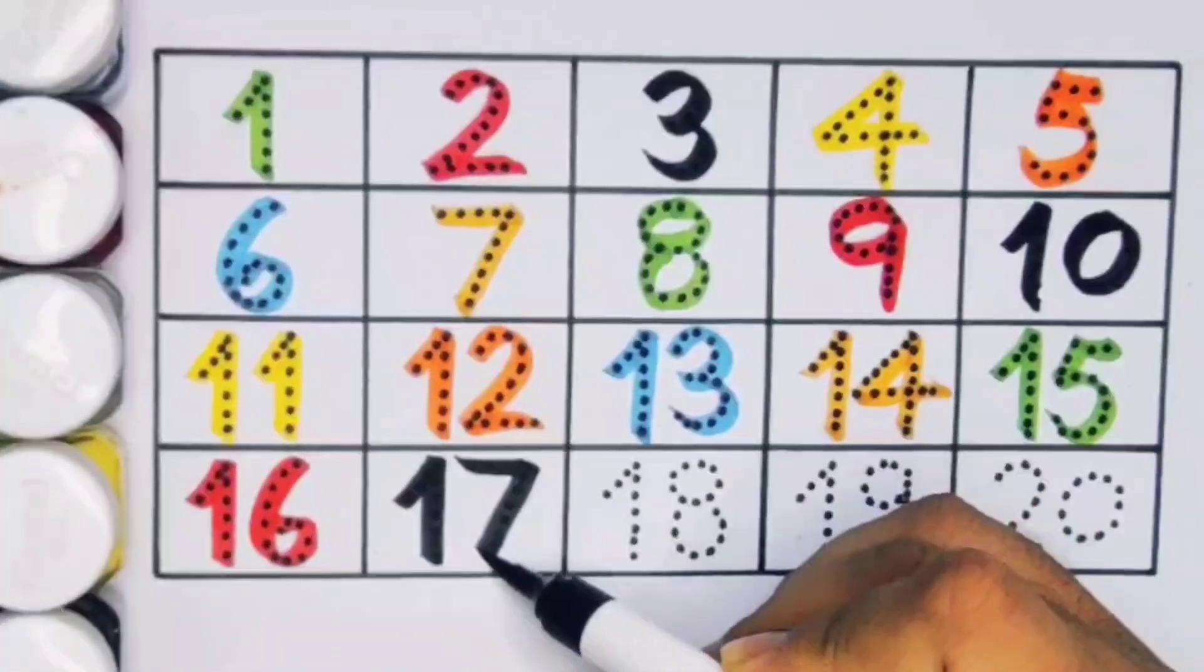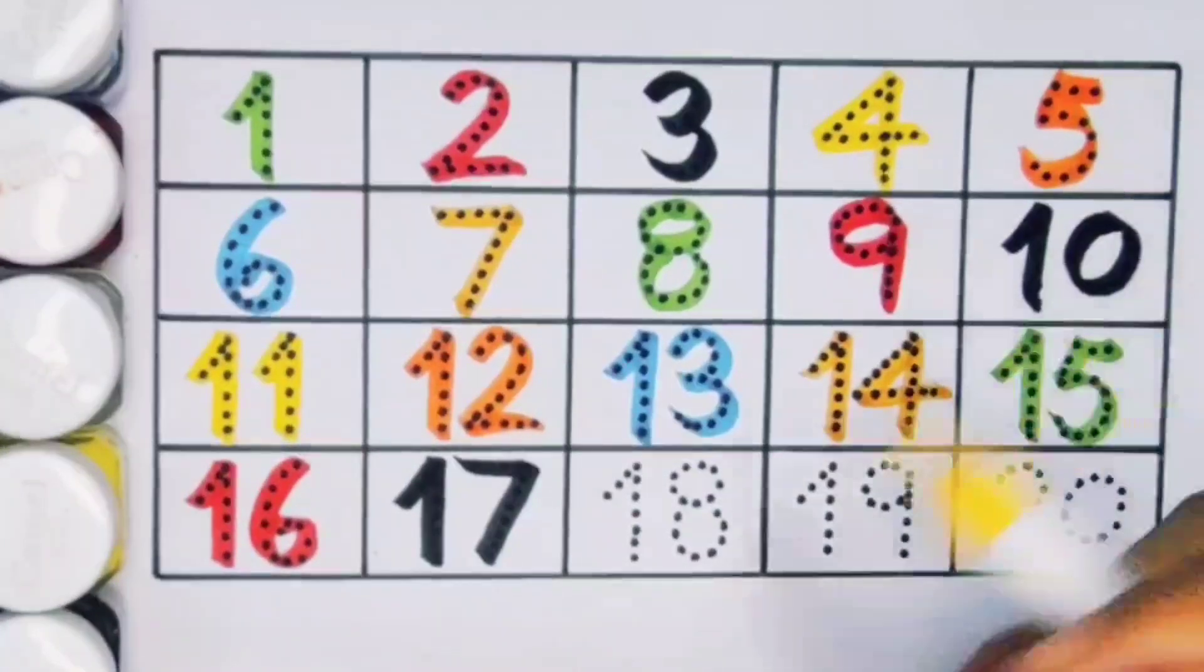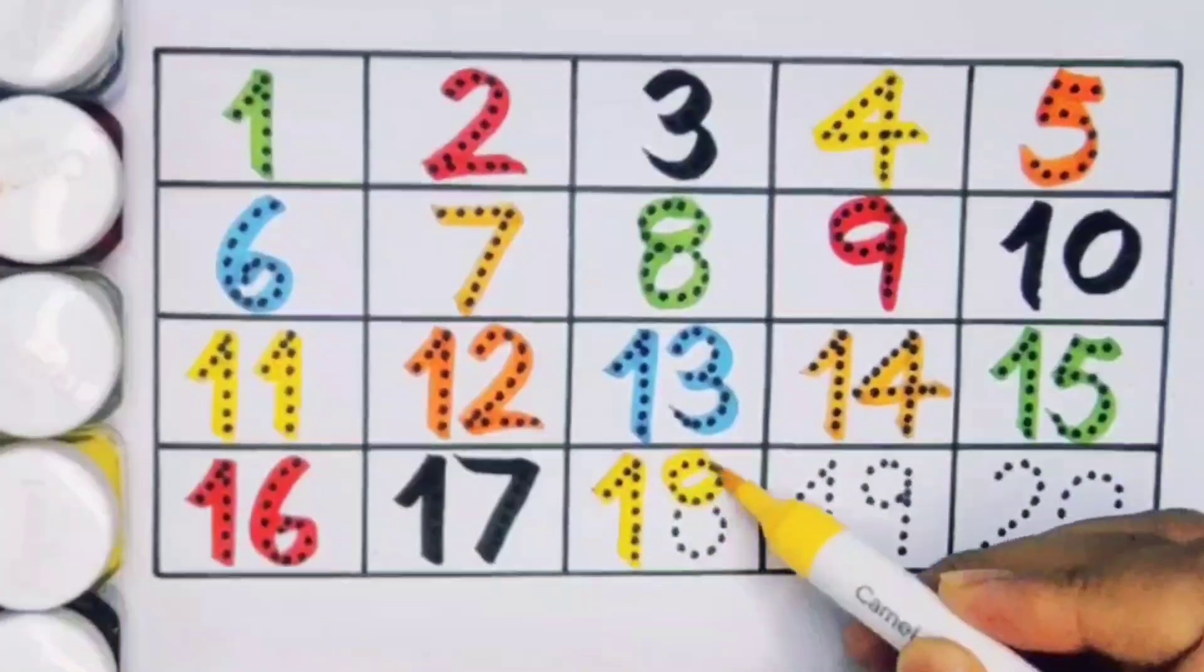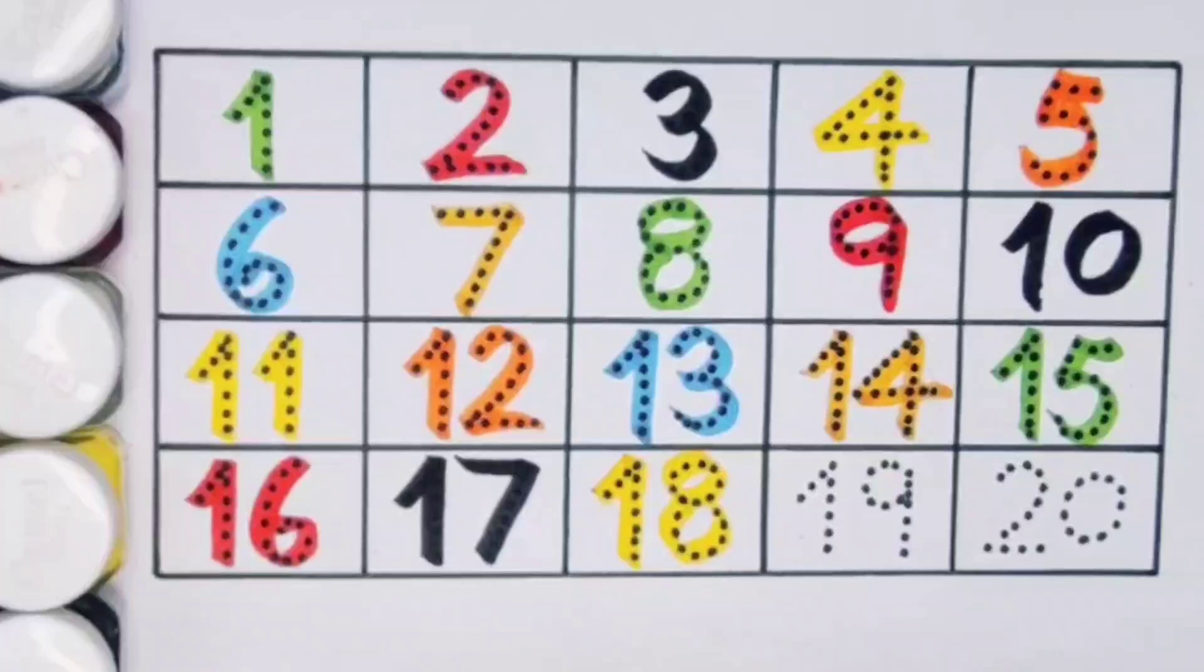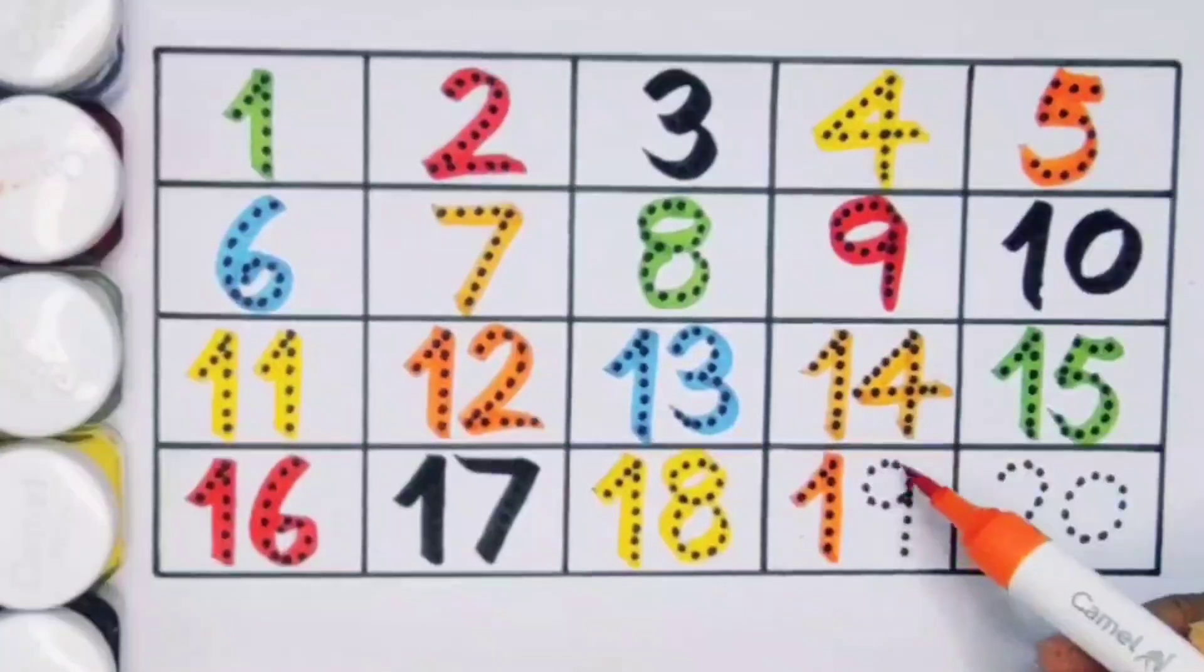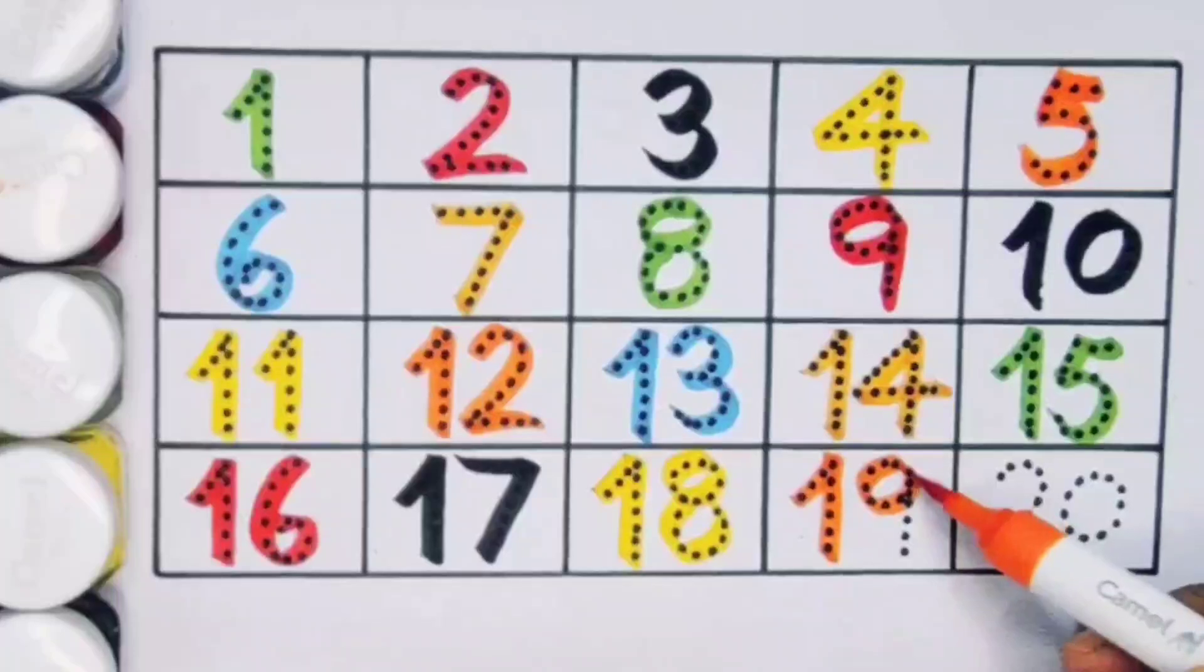Next kids, eighteen, one eight eighteen, number eighteen. Next, nineteen, one nine nineteen, number nineteen. Next, twenty, two zero twenty, number twenty.